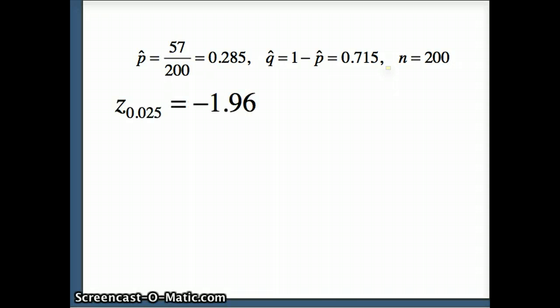So plugging 0.285 in here, I'm going to plug in 1.96 since it's plus or minus; the negative sign here isn't really an issue. So it'll be 0.285 plus or minus 1.96 square root—the p-hat is 0.285, the q-hat is 0.715, and the n is 200.